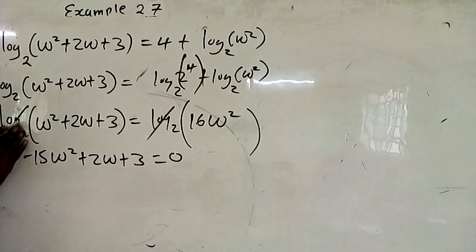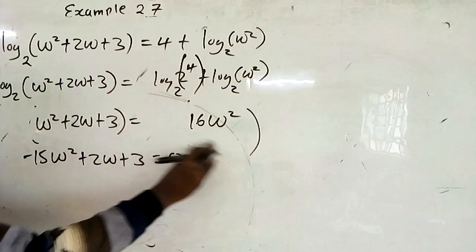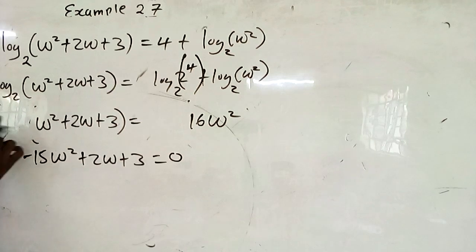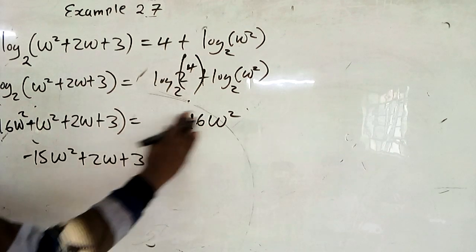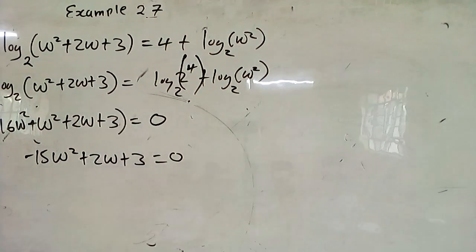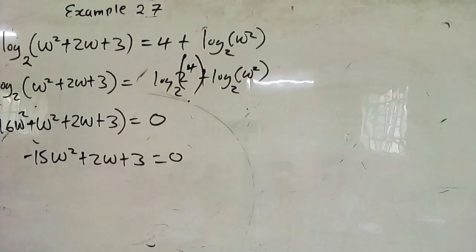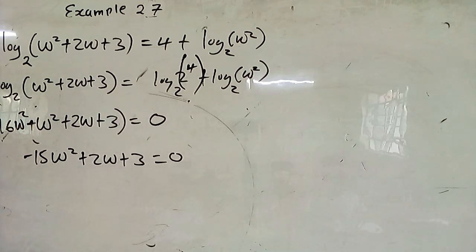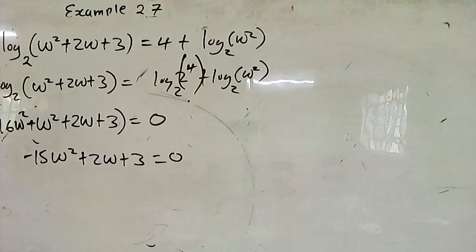After ignoring the logs, this is what you are left with. When you bring 16w squared across it becomes negative, so the last equation you get is negative 15w squared plus 2w plus 3 equals zero. Try factorization: the product is negative 15 times 3, which is negative 45, and the sum is positive 2.